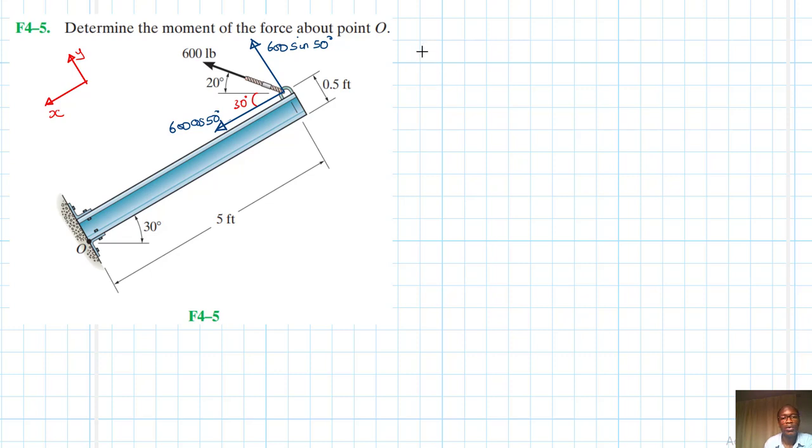Then our moment, the resultant moment about point O with clockwise being our reference, is just going to be equal to the summation of FD.